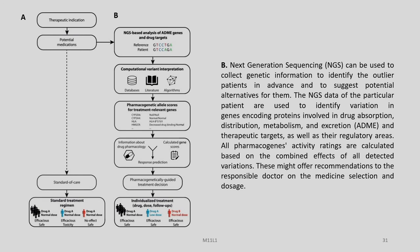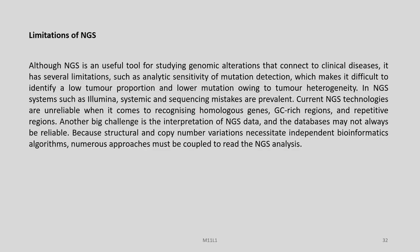We see a huge paradigm shift in therapeutic approaches in the pre- and post-NGS era. However, there are certain limitations of NGS. Although it is a very useful tool for studying genomic alterations that connect to clinical diseases, it has several limitations: analytical sensitivity of mutation detection makes it difficult to identify a low tumor proportion and lower mutations owing to tumor heterogeneity. In NGS systems such as Illumina, systematic and sequencing mistakes are prevalent. Current NGS technologies are unreliable when it comes to recognizing homologized genes. Another big challenge is the interpretation of NGS data, and the databases may not always be reliable because structural and copy number variations necessitate independent bioinformatics algorithms. Numerous approaches must be coupled to read the NGS analysis.